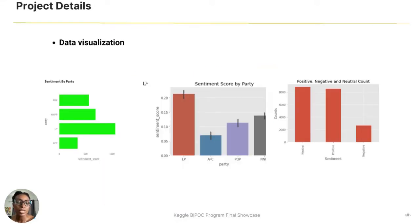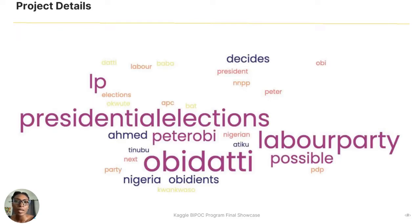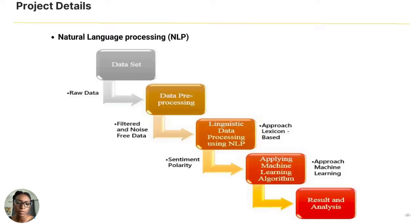This visualization depicts the total sentiment score by party and the total sentiment counts. This visualization suggests that LP has high name recognition and is a major player in the upcoming election.